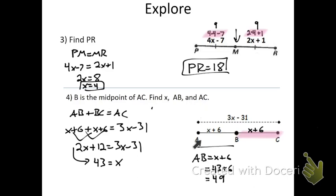It also wants us to find AC. If we know AB has a length of 49, we know AC — the entire thing — must be twice as long because B is the midpoint. So AC equals 2 times the length of AB — the whole segment is going to be twice as long as half the segment. So 2 times 49 gives us AC with a length of 98.